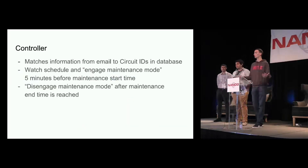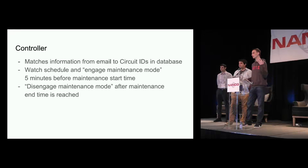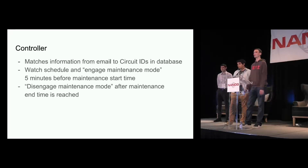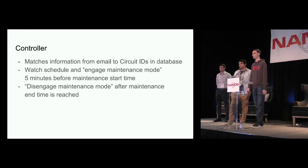The controller matches information from the emails to circuit IDs in the database. Once we have that information, we can identify the device that the circuit is on, the interface it's connected to, the peer, the session, and any other information needed to actually shift traffic. The controller will then watch the schedule and look for events that are about to go into their maintenance period — we set it to about five minutes before the maintenance start time. About five minutes before maintenance starts, it will kick off the script that shifts traffic off that link. The controller will then keep watching and wait until the event has reached its end time, at which point it will disengage maintenance mode by running the script that shifts traffic back onto the link.